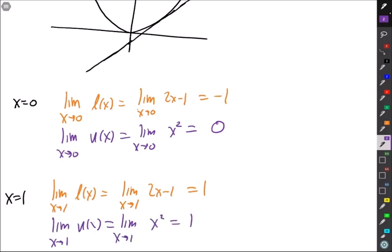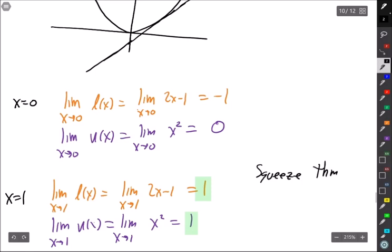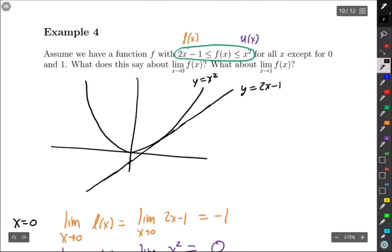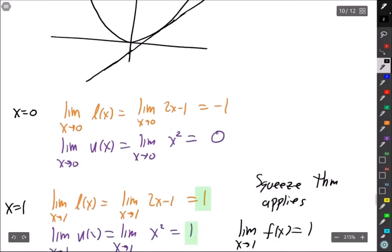So what happens here? Well at 1 we notice that these two numbers are equal, them being equal is exactly what the squeeze theorem needs to apply. So at 1 squeeze theorem applies which means that the limit of f at x equals 1 exists and must be 1 because we have the inequalities from up here and we have the limits being equal from down here.